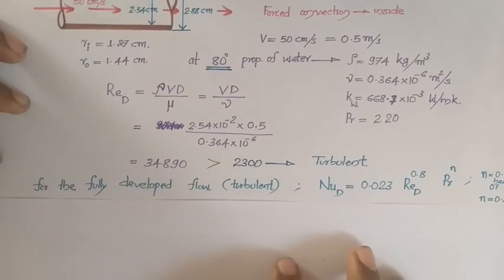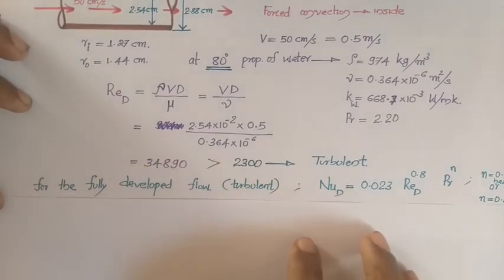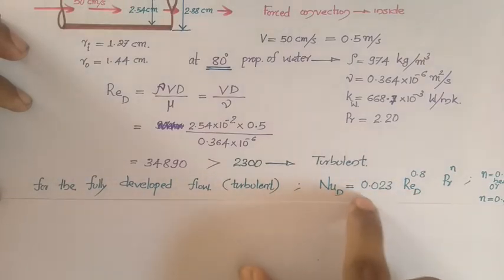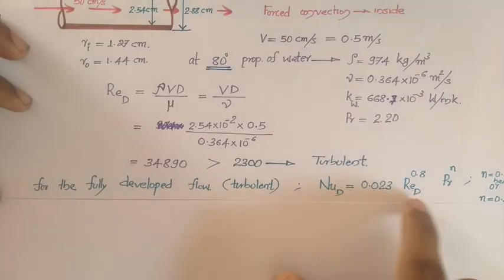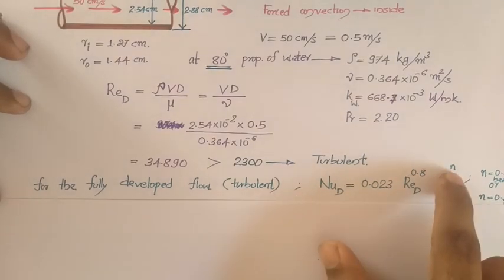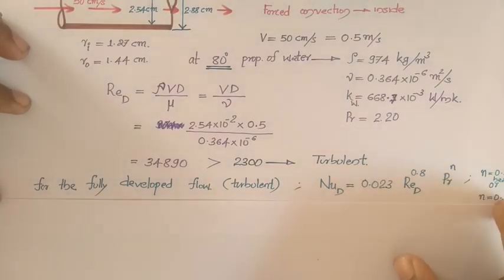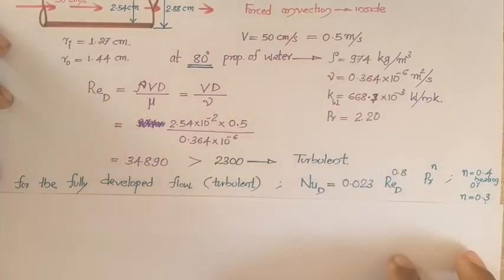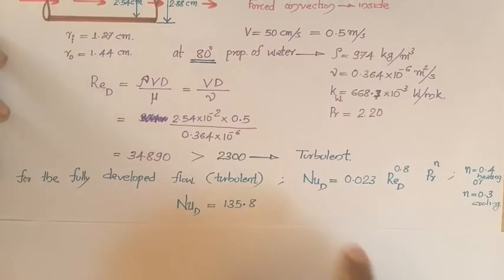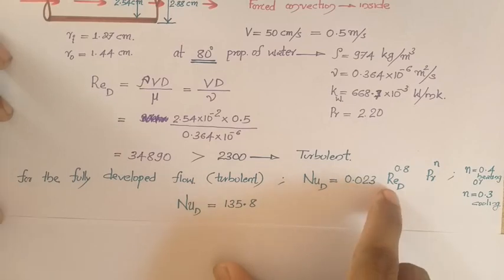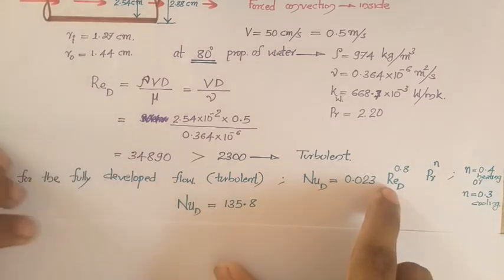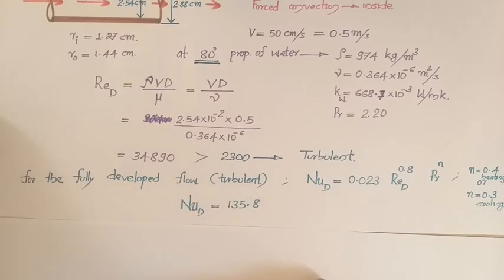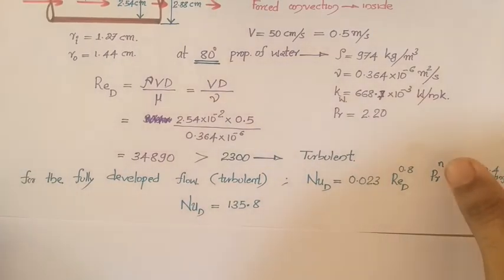From the data book — which you will have studied in the convection chapter — we use the Dittus-Boelter correlation: Nu = 0.023 × Re^0.8 × Pr^N, where N is 0.4 for heating or 0.3 for cooling. Here we take N = 0.3 since nothing else is specified. Substituting Reynolds number = 34,890 and Prandtl number = 2.2, we get the Nusselt number as 135.8.